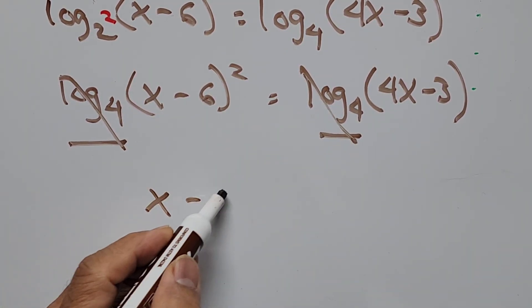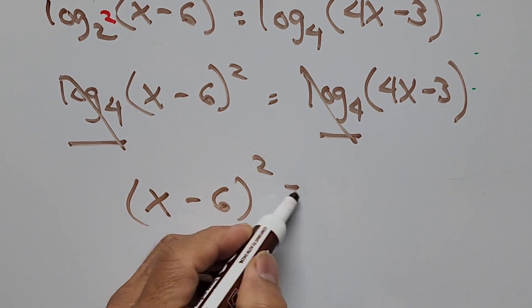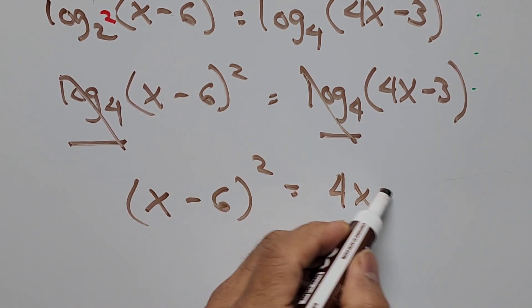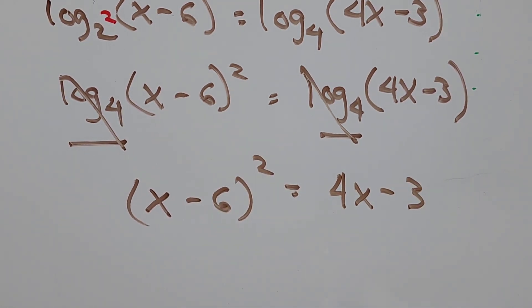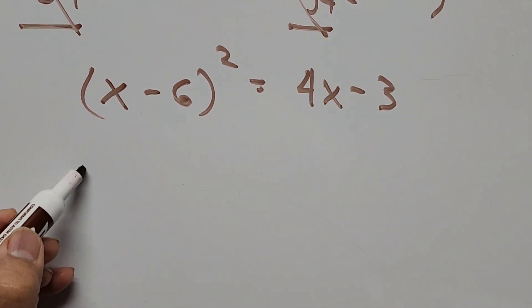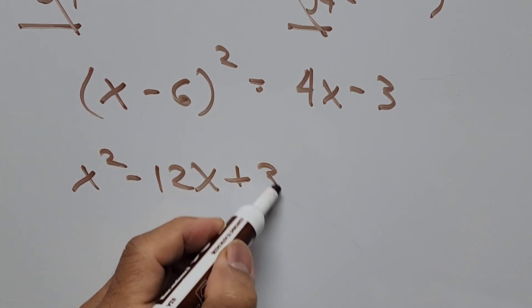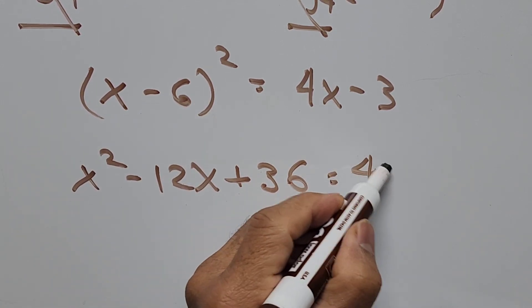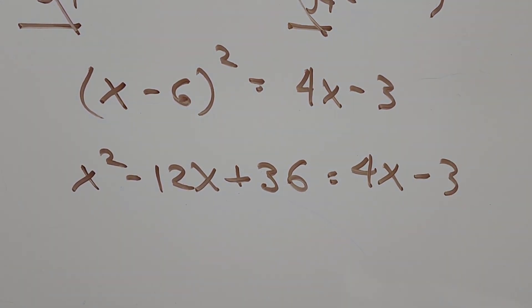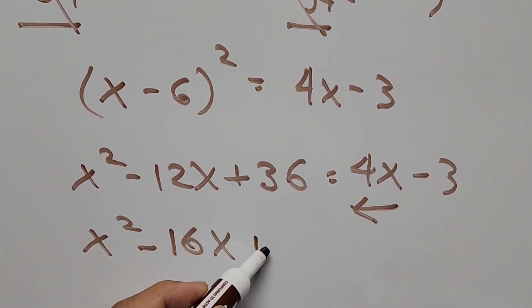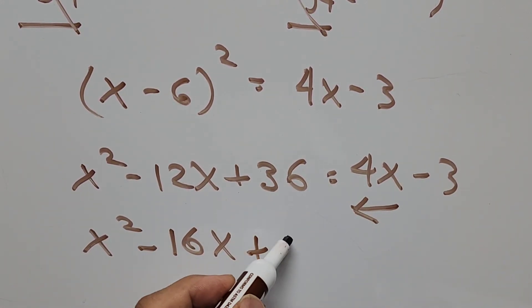On the left hand side, x squared minus 12x plus 36 equals 4x minus 3. Combine all the terms so we have x squared minus 16x plus 36 plus 3 is 39 equals zero.